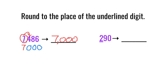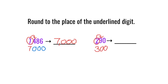Let's try the next one. We have 290 — that two is underlined, so we're going to circle the two and look next door. We have a nine, and the nine has so much power: five or more, add one more — that two becomes a three and everything after becomes zeros. So 290 when rounded to the nearest hundred becomes 300, because that nine had the power to bump the two up to a three.